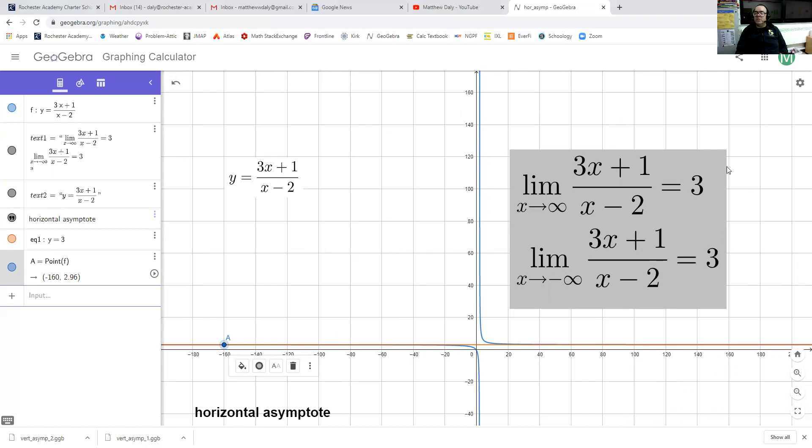So in the vertical asymptote case, the infinity showed up on the right hand side of the equation. When we're dealing with horizontal asymptotes, the infinity and the negative infinity are showing up as the limit of the x value.